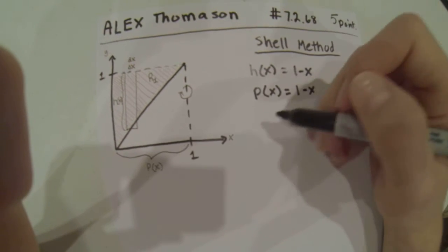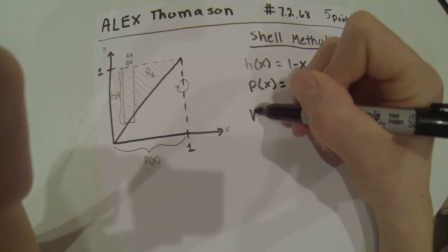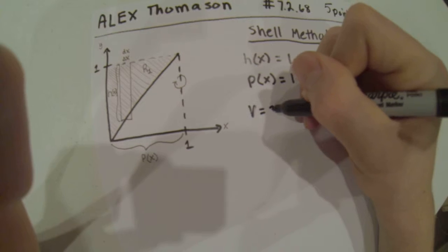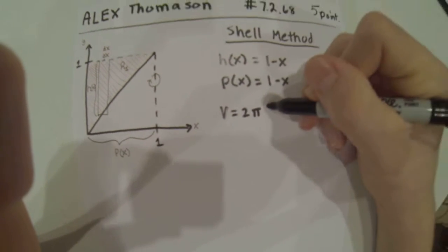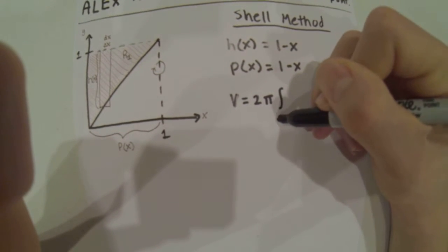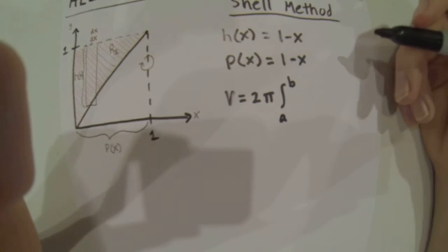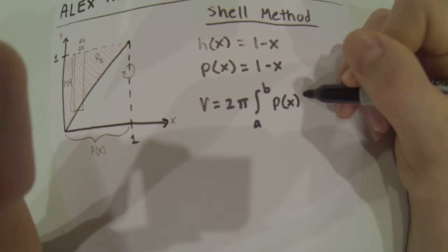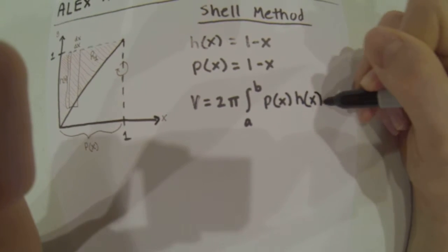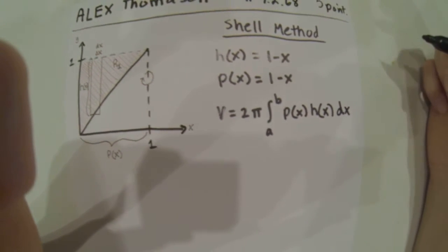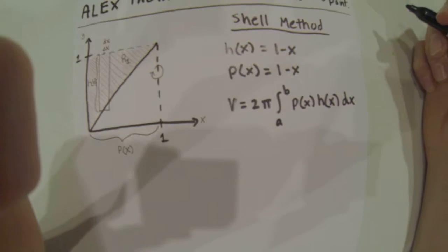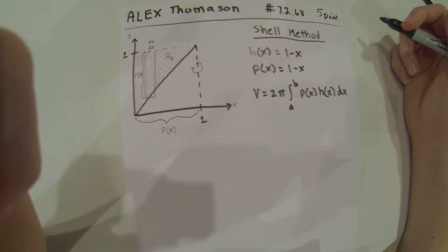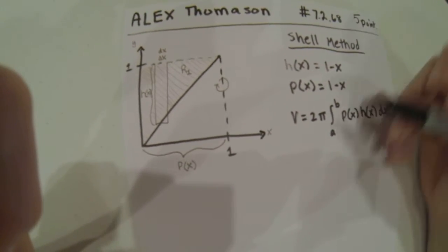Our volume is 2π integral from a to b of p(x) times h(x) dx. So all we have to do here is plug in what we've already gathered from the problem.